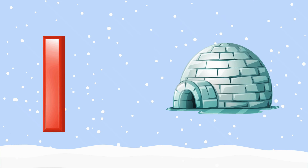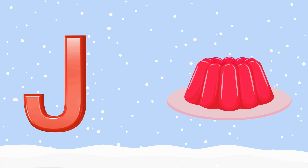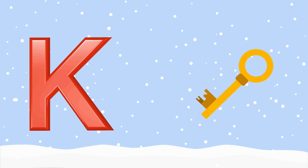I. I is for igloo. J. J is for jelly. K. K is for key.